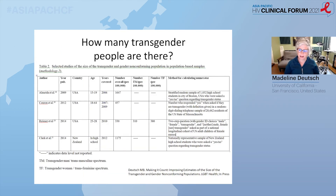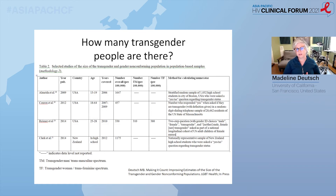How many trans people are there? There have been a few population-level studies done, most in the Western context. From four population samples — three in the U.S. and one in New Zealand — estimates range from 0.33% to 1.6%. Some older, methodologically flawed studies suggested 1 in 30,000 or 1 in 50,000. The more current population health-level studies show a range of roughly half a percent to 1.5%, representing a non-trivial population size.